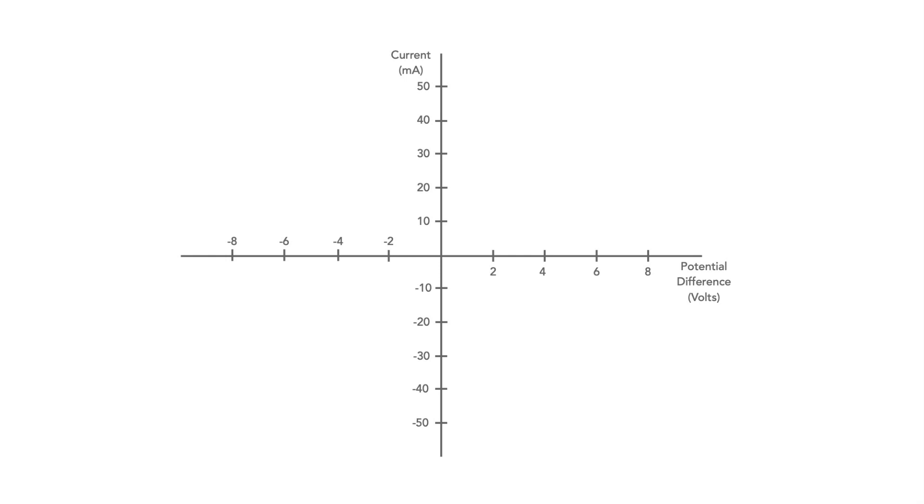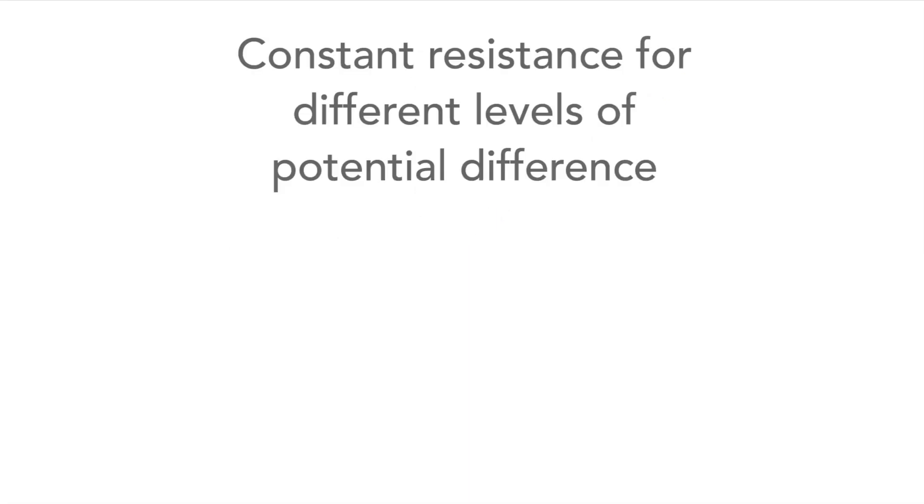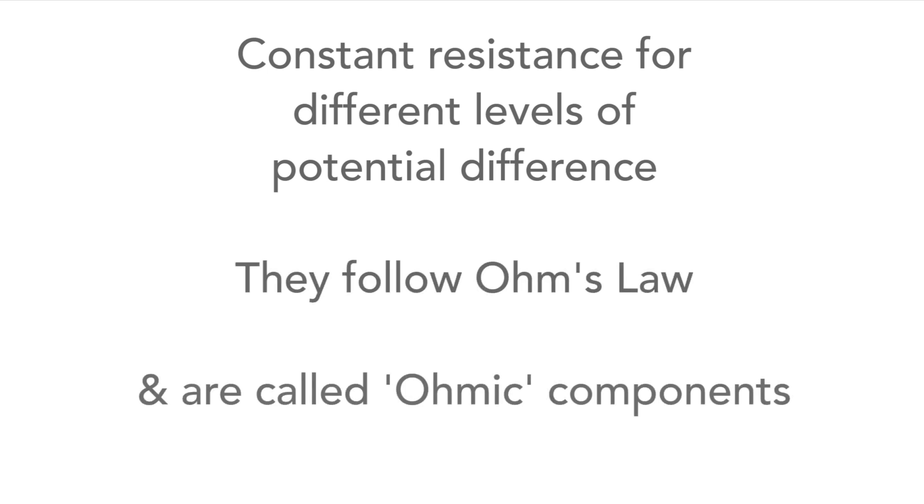It's found that resistors like these have a straight line relationship between the current and potential difference. In other words they have a constant resistance for the different levels of potential difference and they follow Ohm's law. They are what are termed ohmic components.